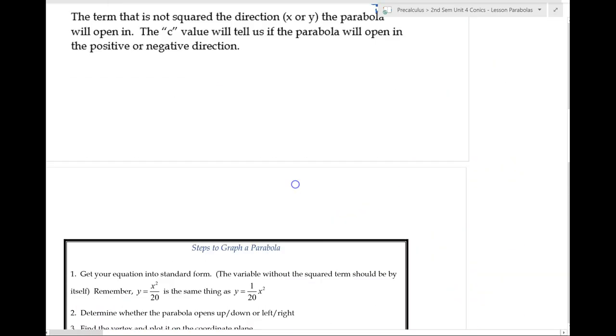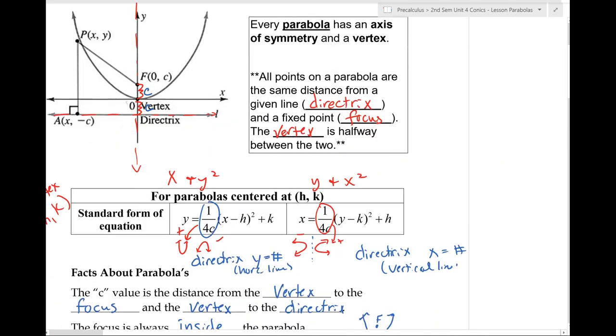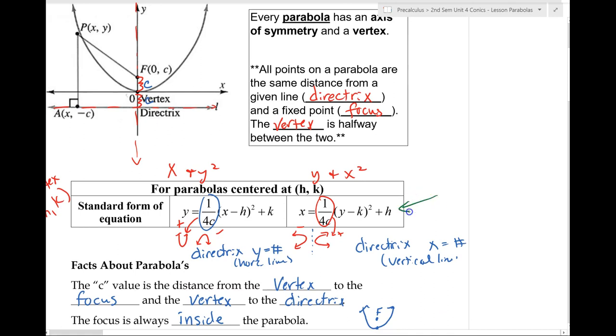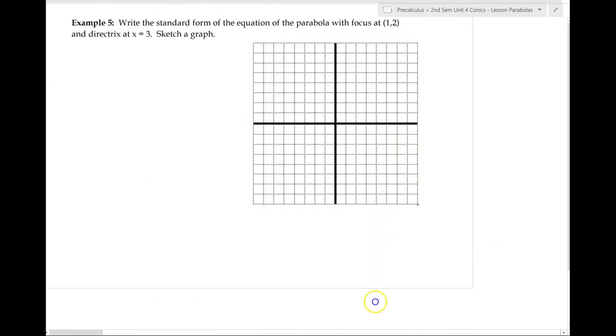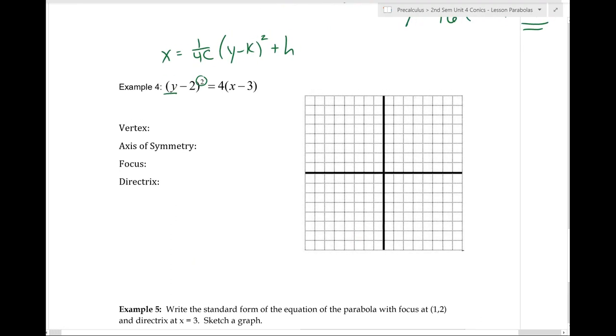So I'm just going back to like our very first page. And we're using this one, which then should tell us if we're opening left or right. And so we're going to be using an axis of symmetry that's actually a horizontal line on this one. So we just want to make sure that we have all the stuff that we need.